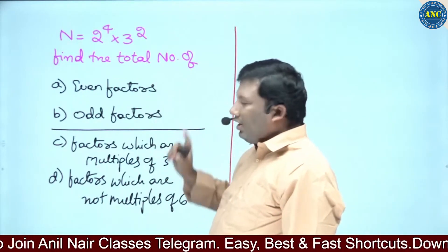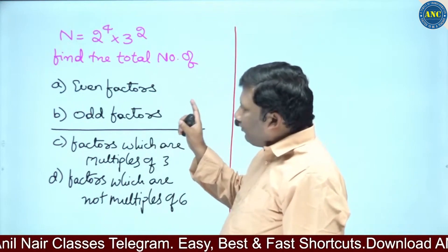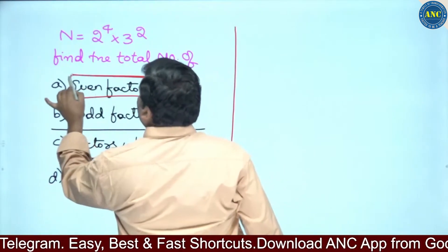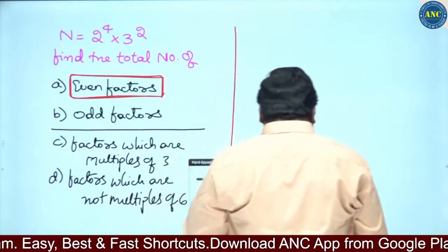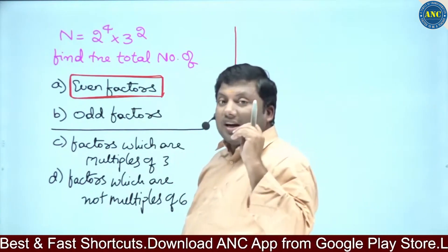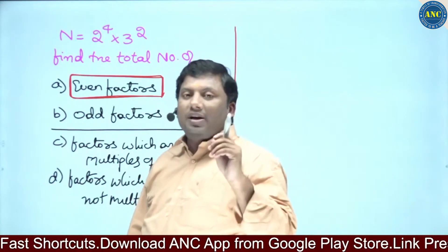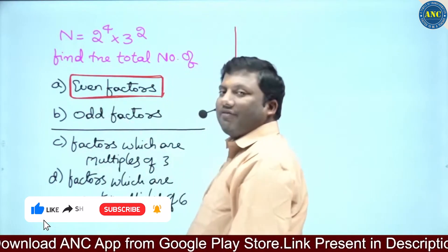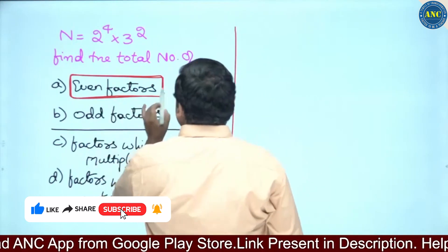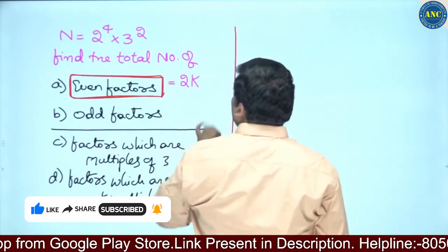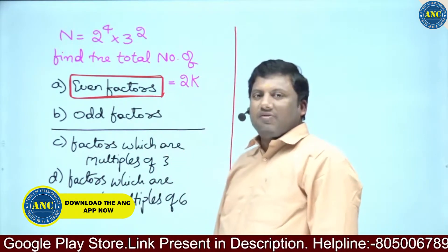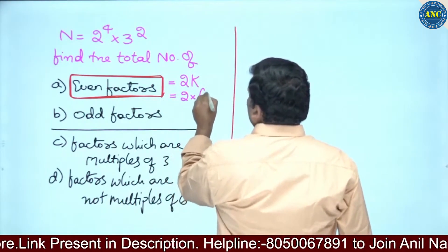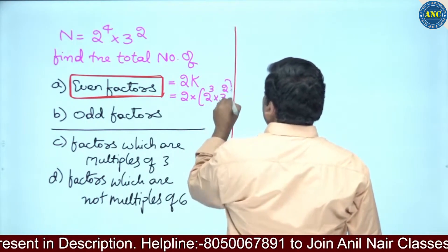Given n = 2 power 4 into 3 square, find the total number of even factors and odd factors. What do you mean by even factors? Factors which are even numbers. An even number is a number divisible by 2. Any number divisible by 2 is of the form 2 into something — so this will be 2 into 2 cube into 3 square.